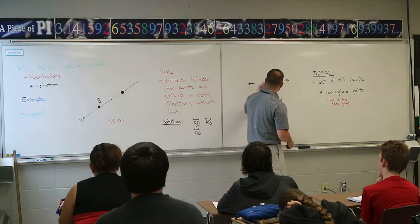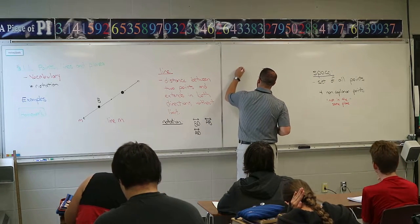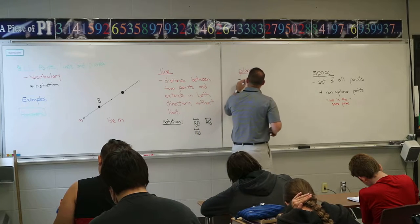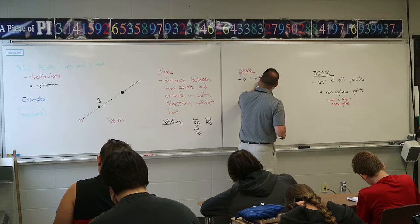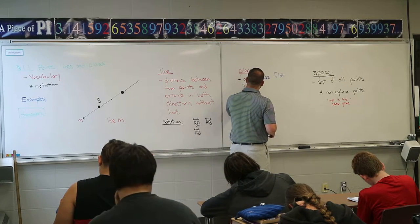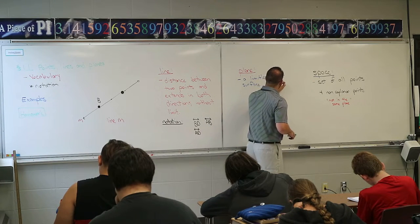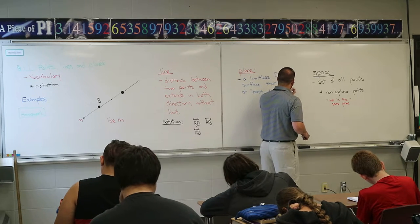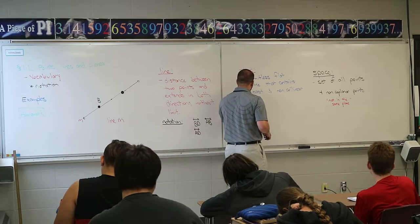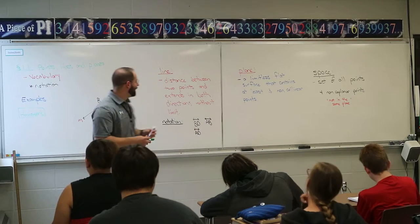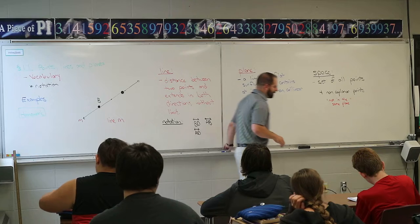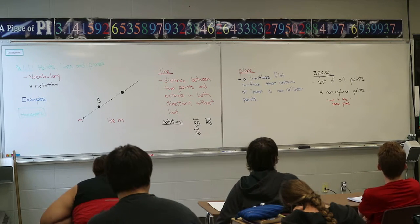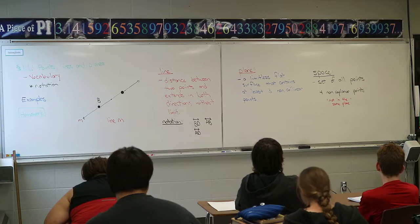Now, the word plane. Not an airplane — a geometrical plane. A plane is a limitless flat surface that contains at least three non-collinear points. Every time, the definitions get more thick and more difficult-looking. But if you truly understood that definition for a plane, you'd know about 90% of your geometry, because there's so much packed into it.